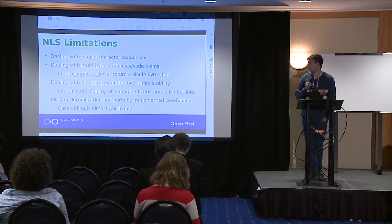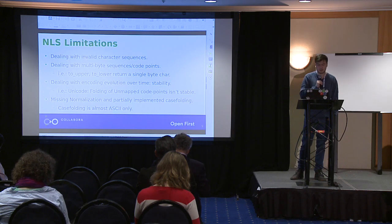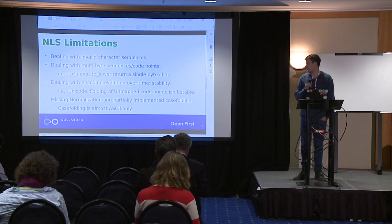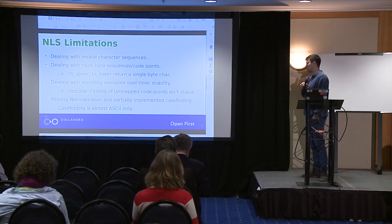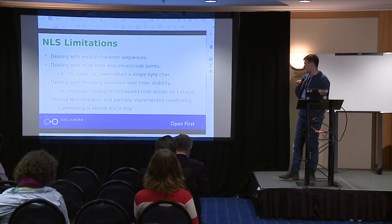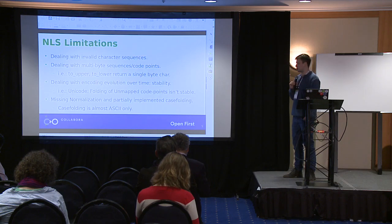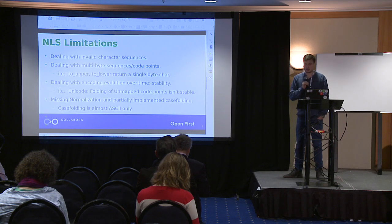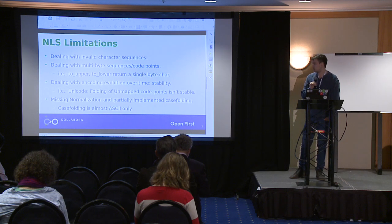So we need NLS to be able to deal not only with encodings, but with specific encoding versions of each character set. It's also missing normalization support entirely — there is no normalization support — and it has only partially implemented case folding. What we have now is basically case folding for ASCII; if you look at other character tables, it doesn't do case folding at all.